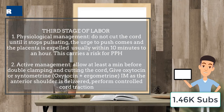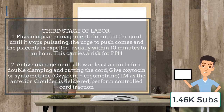Active management allows at least a minute before double clamping and cutting the umbilical cord. Do not also forget to give oxytocin or syntometrine intramuscularly as the anterior shoulder is delivered. Also perform controlled cord traction with support to the perineum.